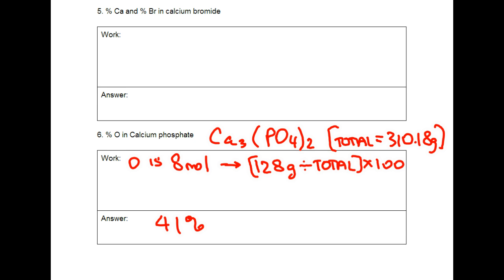Number 6, it's just asking for the percentage of oxygen in calcium phosphate. So we have the total mass of calcium phosphate. And the only tricky part is that oxygen has 4 here. But it's in parentheses and it has a 2 here. So 4 times 2. You have a total of 8 moles of oxygen. 8 moles of oxygen is equal to 128 grams because it's 16 grams per mole. And you divide that by the total mass times 100 and you should get 41 percent.